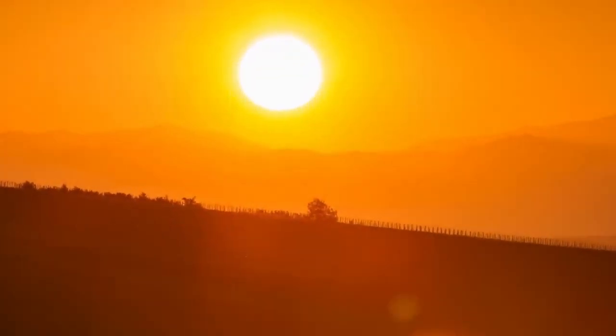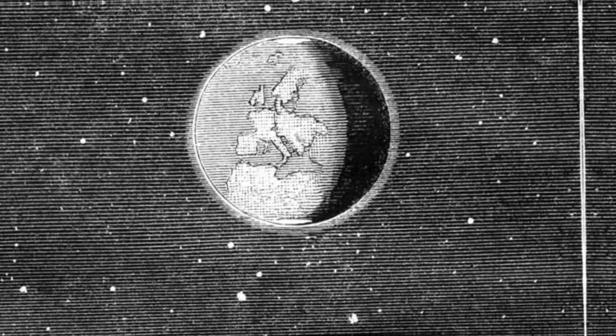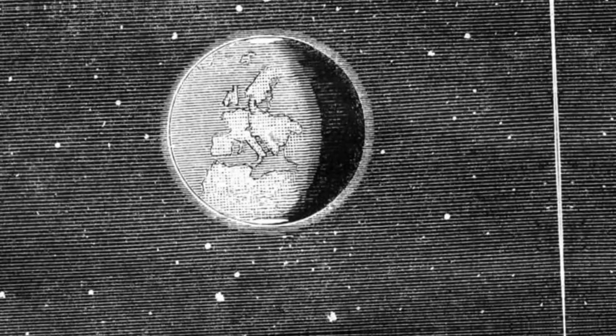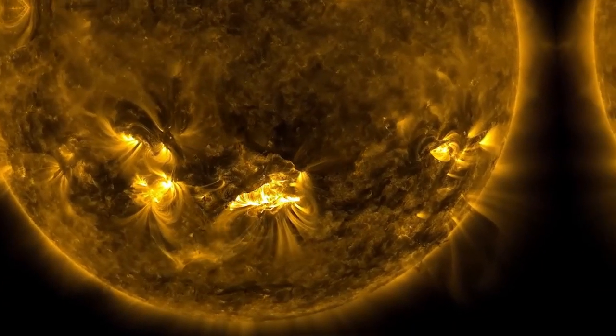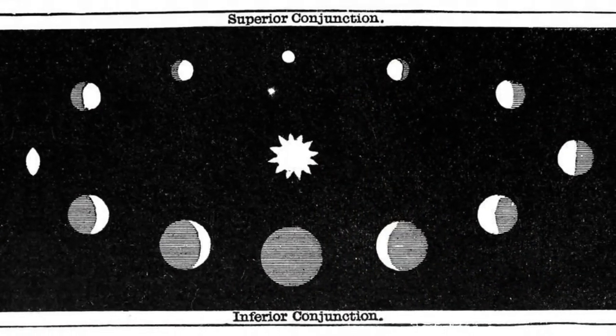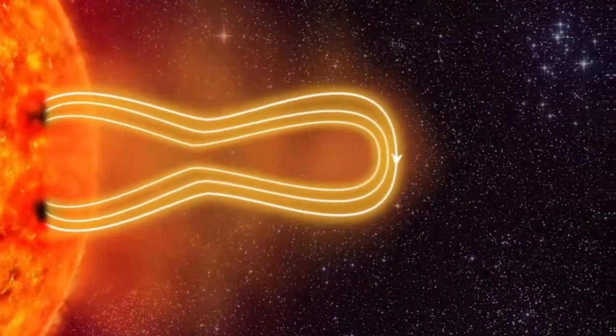In the early hours of September 1, 1859, Richard Carrington, an English astronomer, found himself immersed in the study of sunspots. Suddenly, at around 11 o'clock a.m., he was startled by a brilliant flash of white light erupting from the very region he was observing. Lasting a mere five minutes, this celestial spectacle would soon herald a remarkable event.